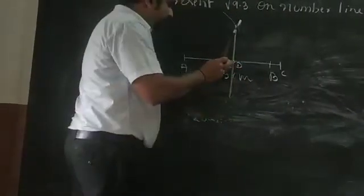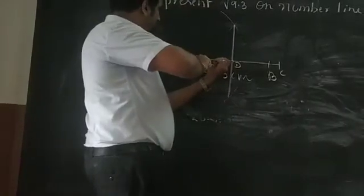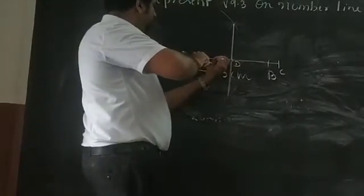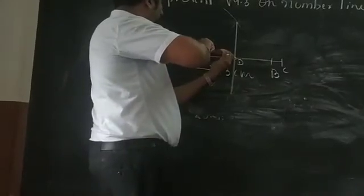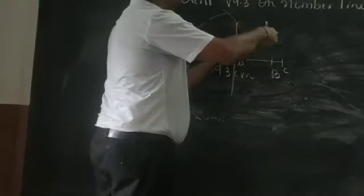And using the point D, see the distance from here to C and draw one semicircle like this. Don't change it. So draw a semicircle like this.